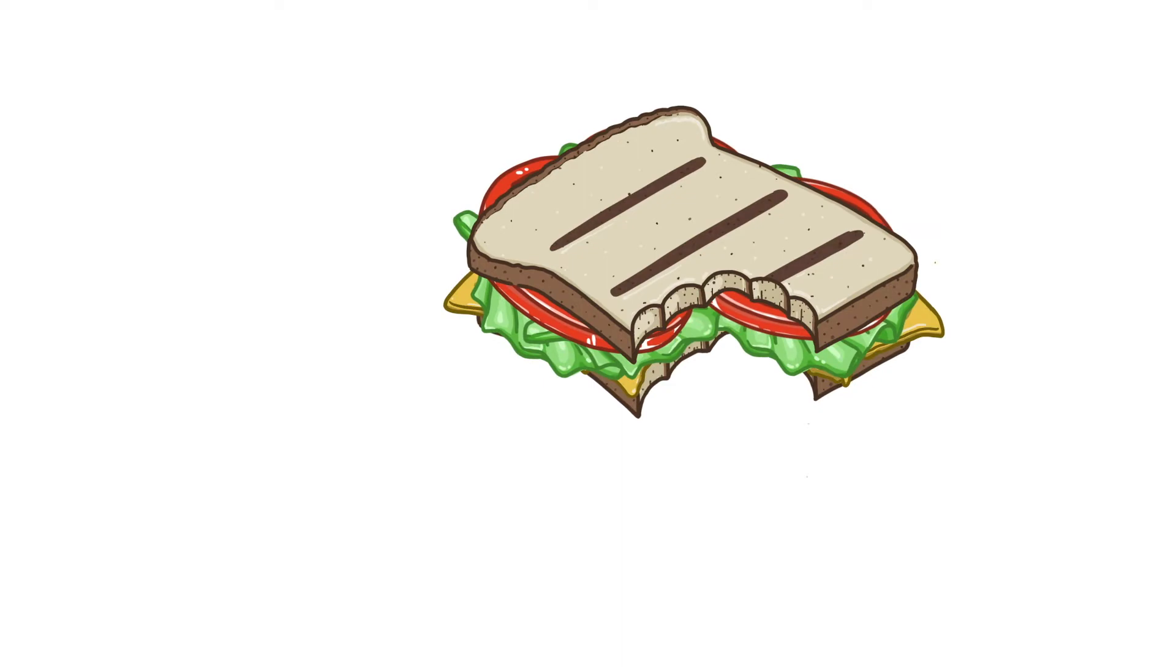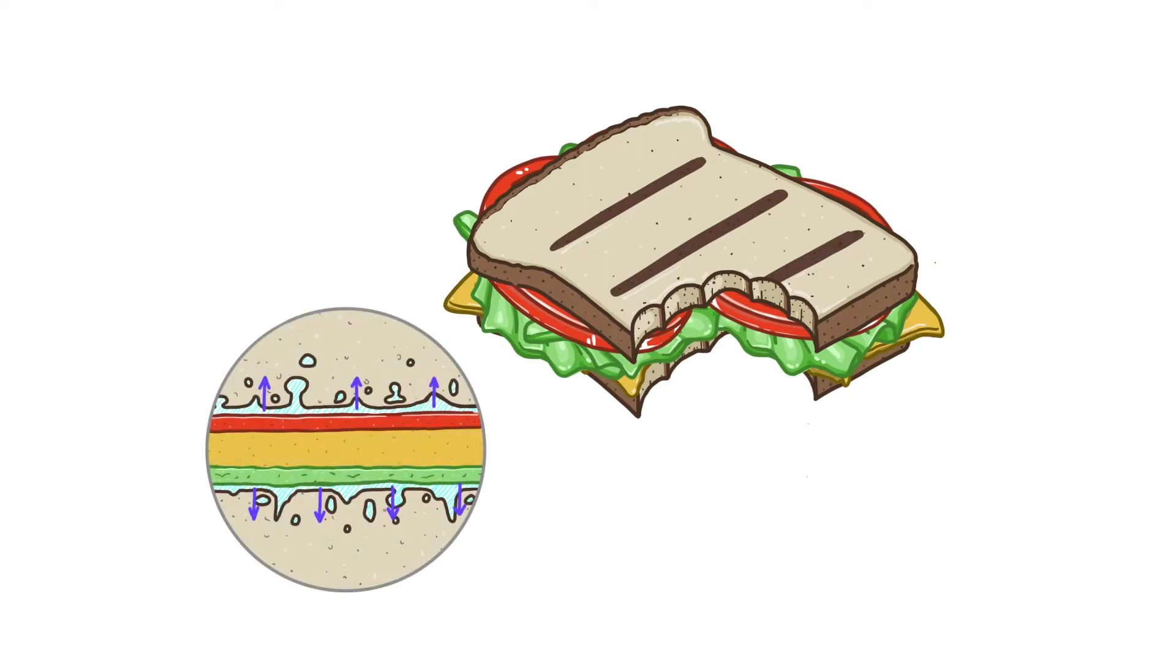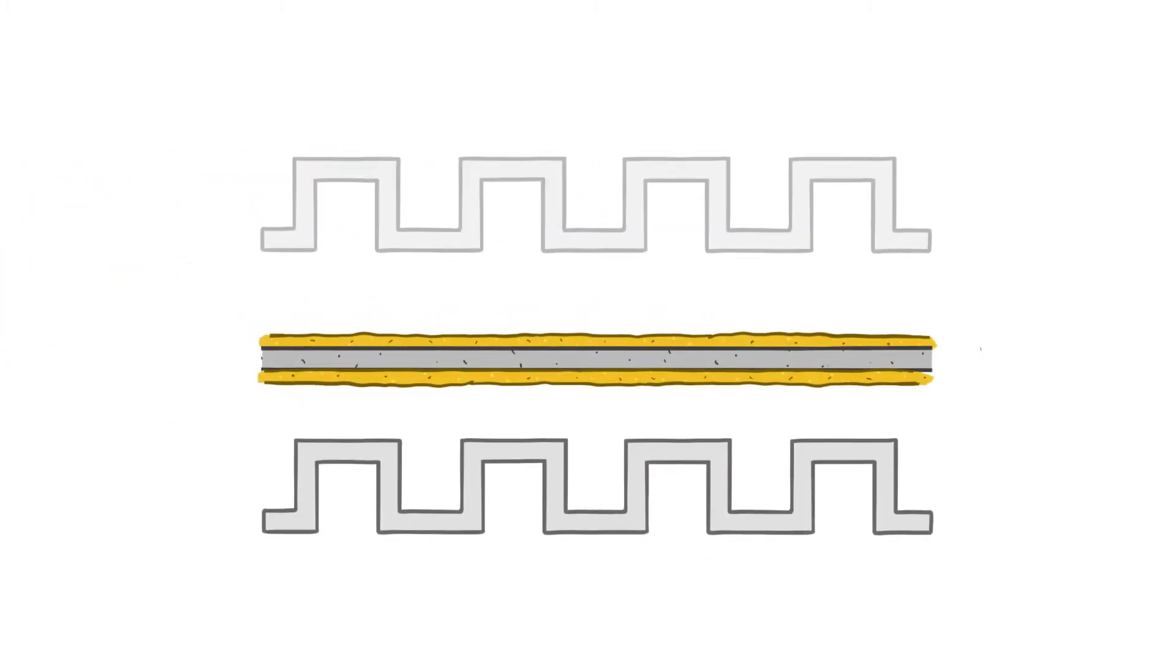The addition of any ingredient would compromise the merging of the two slices. This simple example helped us to understand why considering fins as bread and plates as cheese, it is very important to wash all the components carefully, removing any kind of impurities before the brazing process.